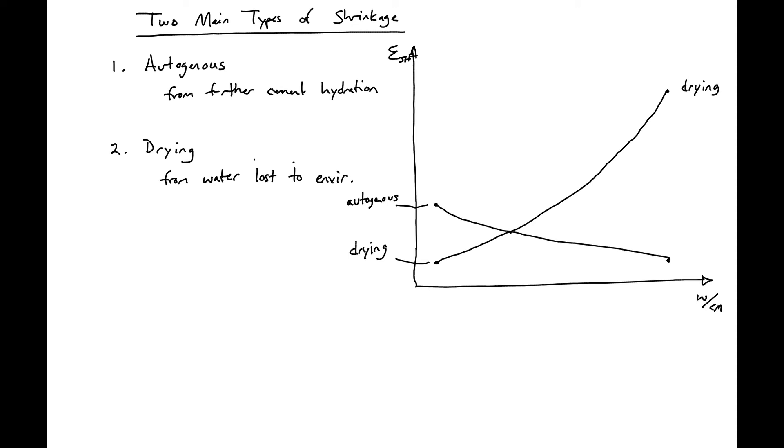At some point, the autogenous shrinkage and drying shrinkage switch as to which one is the primary type of shrinkage. This typically happens at about a water to cement ratio of 0.42.